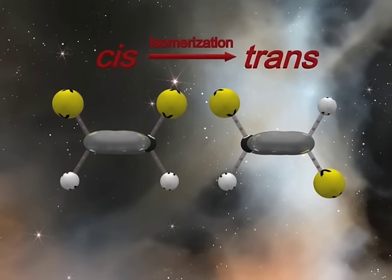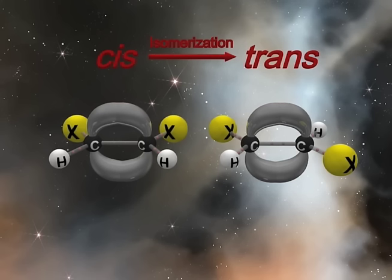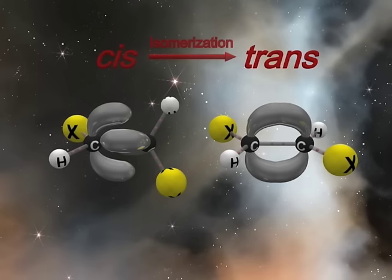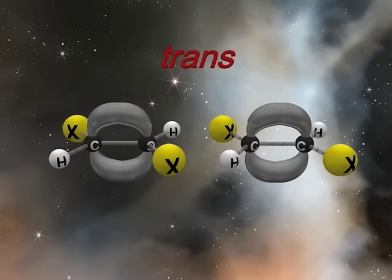For interconversion of the isomers to occur, we need to have free rotation about the carbon-carbon double bond. If this were to happen, it would mean that the pi bond would have to break, which requires approximately 70 kilocalories per mole. This will cause each carbon to lose full valency due to the 2p orbitals no longer overlapping, which will make the alkene unstable or higher in relative energy. Thus, at room temperature, geometric isomers are isolable.